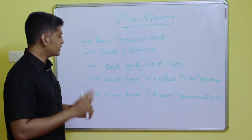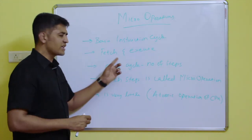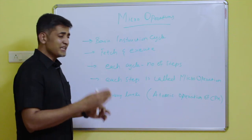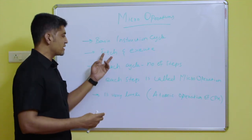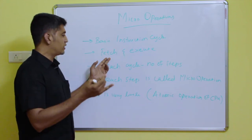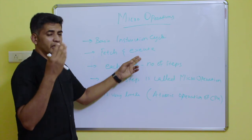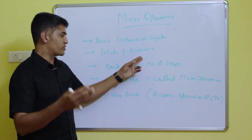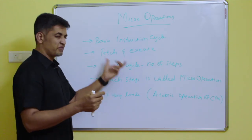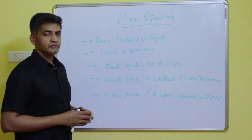A micro operation is a part of the instruction cycle. The instruction cycle has two sub-cycles: fetch cycle and execute cycle. Each cycle has a number of steps — for example, the fetch cycle may include instruction fetch, decode, and operand fetch, while the execute cycle may include execution of the instruction and operand store. Those steps are called micro operations.